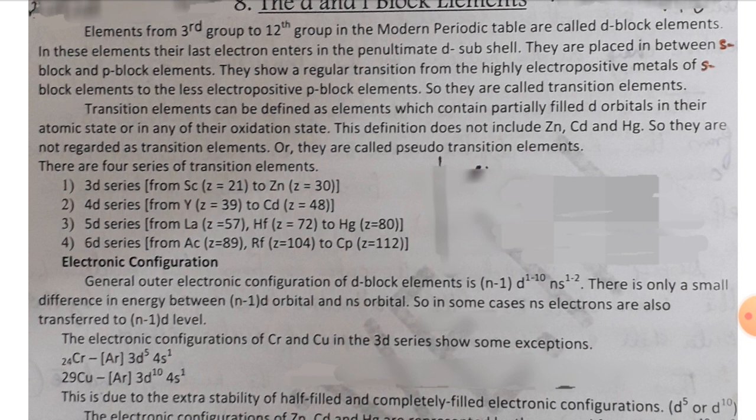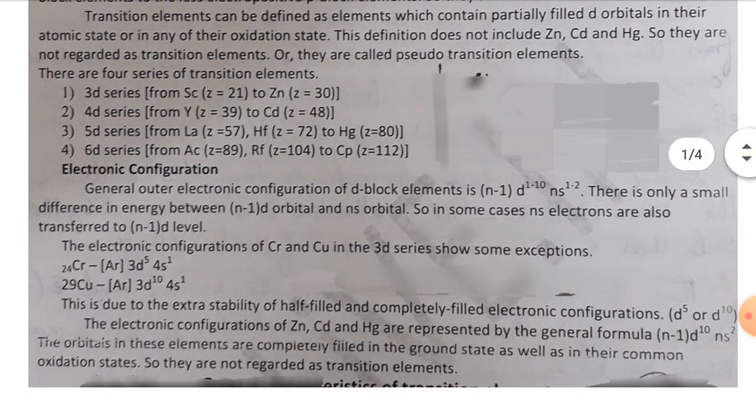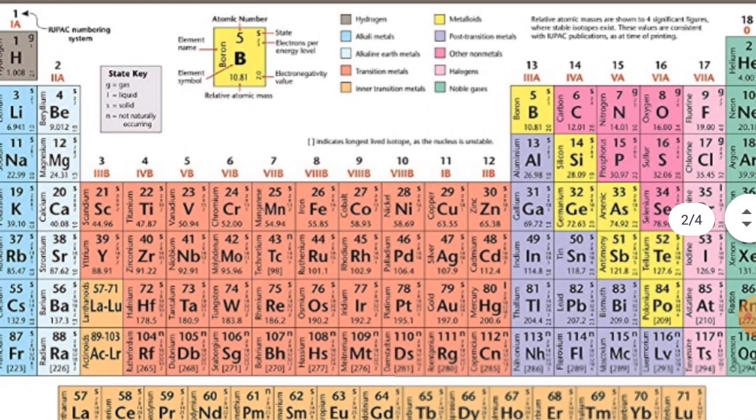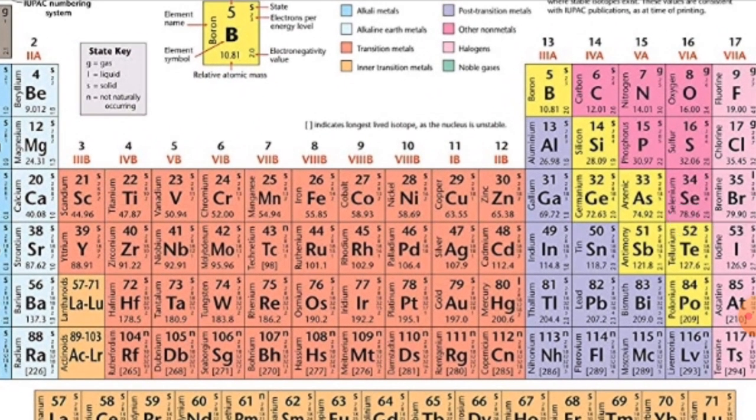There are four series of transition elements. The first is the 3D series starting from Scandium, the second is the 4D series starting from Yttrium, the third is the 5D series starting from Lanthanum, and the fourth is the 6D series starting from Actinium. These represent the period-wise D-block elements in the periodic table.